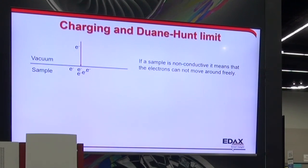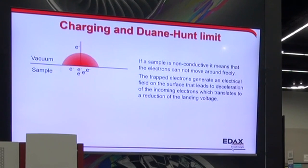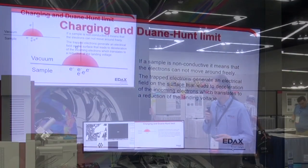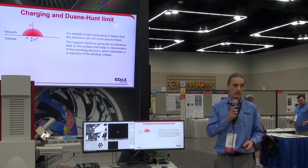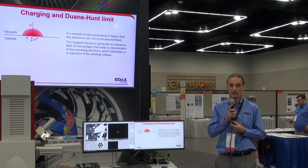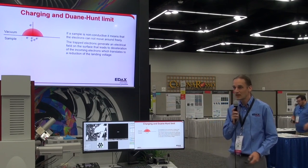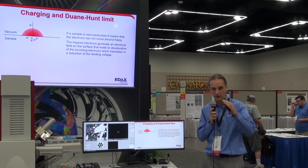If we have a charged particle sitting on the sample, we will have an electrical field. With a negatively charged buildup, we generate a negative field, and we're trying to push a negatively charged electron down through that field. So you'll have Coulomb interaction, essentially slowing down the incoming electron. The landing voltage of that electron is not the acceleration voltage we put through the gun.